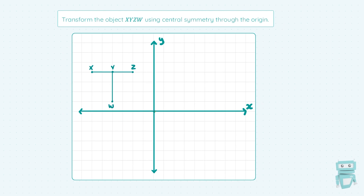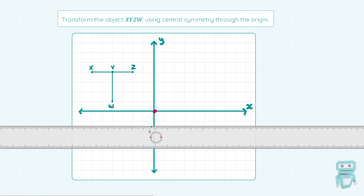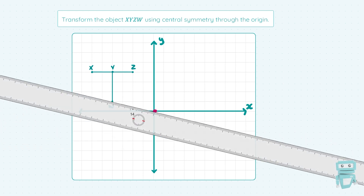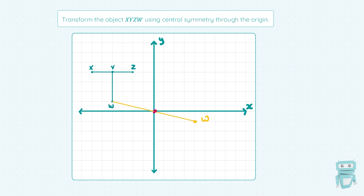Now let's practice central symmetry on another question. I'm asked to transform the object XYZW using central symmetry through the origin. The origin is the crosshairs of our two axes — we'll mark it here with a pink dot. What we want to do is take this T-shaped letter with points XYZW and reflect each point through the origin, coming out the other side the same distance. Let's get our ruler and get started. We'll start with point W, line the ruler up with W and the origin, measure the distance from W to the origin, and come out that exact same distance the other side. We'll plot our point and call this W prime. On a coordinate grid like this, it's easy to check: W to the origin goes across four boxes and down one, so we need to go across four boxes and down another one from the origin — and it all matches up.